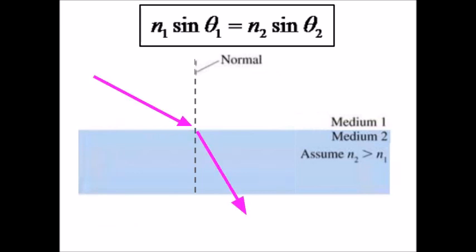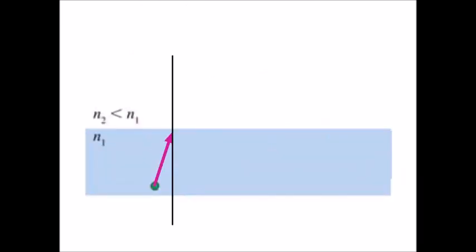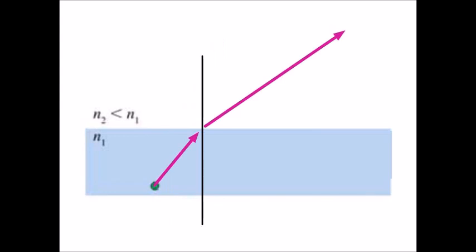The ray of light has bent towards the normal, but that's a problem. Can you think of what the problem is? The problem is what if the light comes from inside the glass or inside the water? Again, Snell's law says that the angle will change. This time we are being refracted away from the normal line, away from the normal line. And that's the problem.